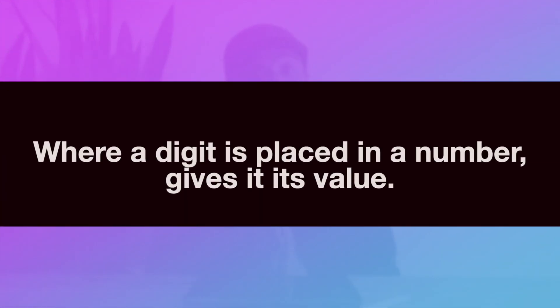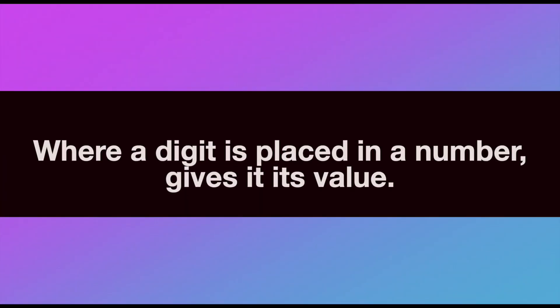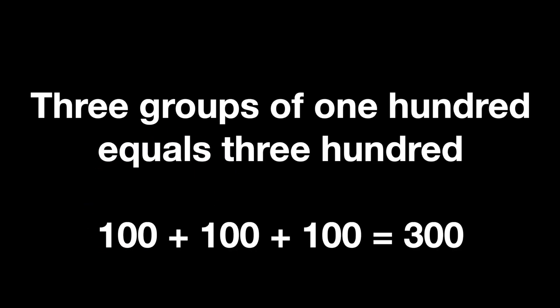Can you see where the number is placed gives it its value? Now let's look at the number 312. The three has shifted right to the front — it's not at the back or in the middle anymore. The three is now in the hundreds place. That tells us there are three groups of 100, which equals 300 — 100 plus 100 plus 100, or three times 100.